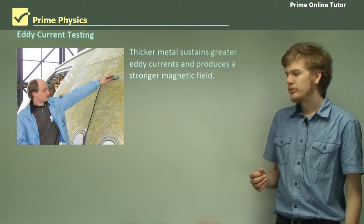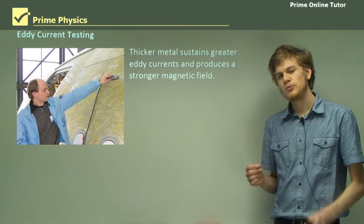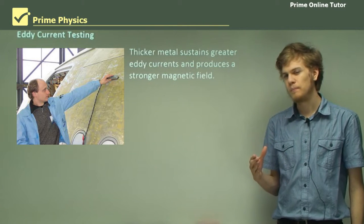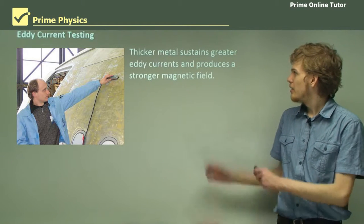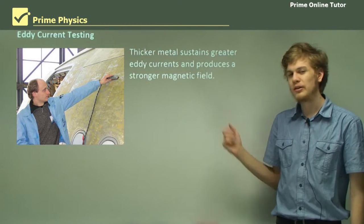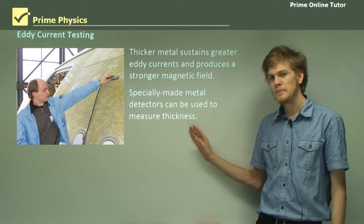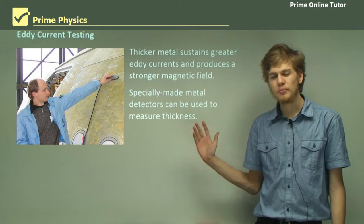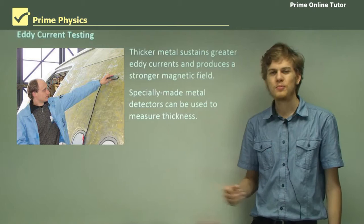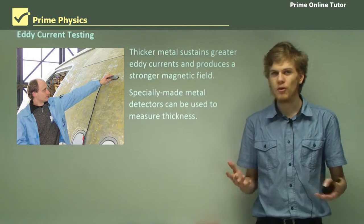Suppose we want a piece of metal to have a uniform thickness all the way through, so it's always exactly the same depth. We know that thicker metal will sustain greater eddy currents and produce a stronger magnetic field. If we have a specially made metal detector, we can measure the thickness of a piece of metal just by figuring out how many eddy currents it produces.